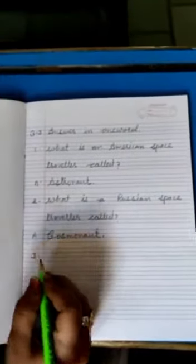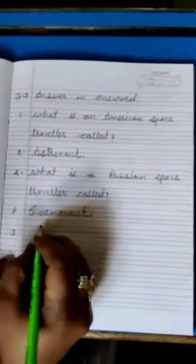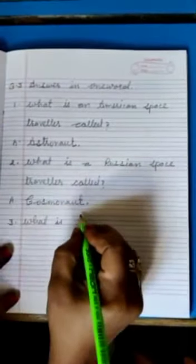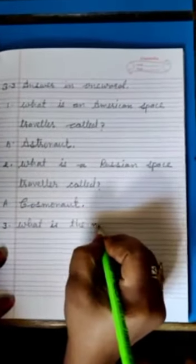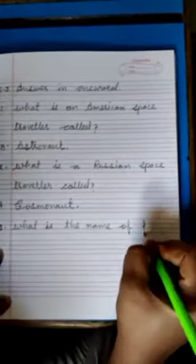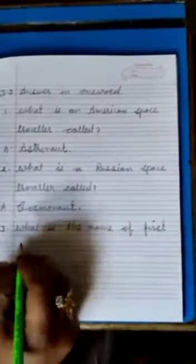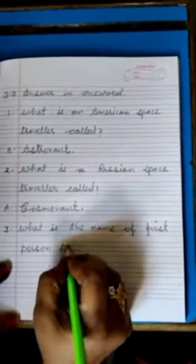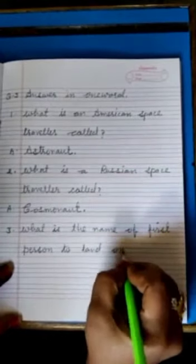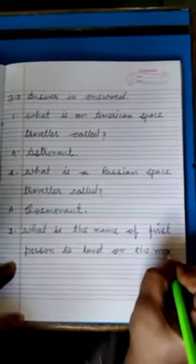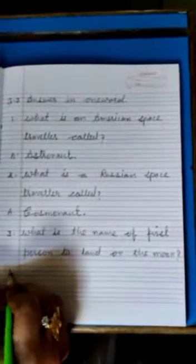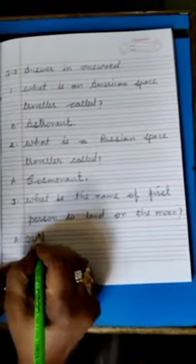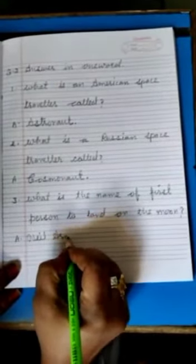Three. What is the name of the first person to land on the moon? Answer: Neil Armstrong.